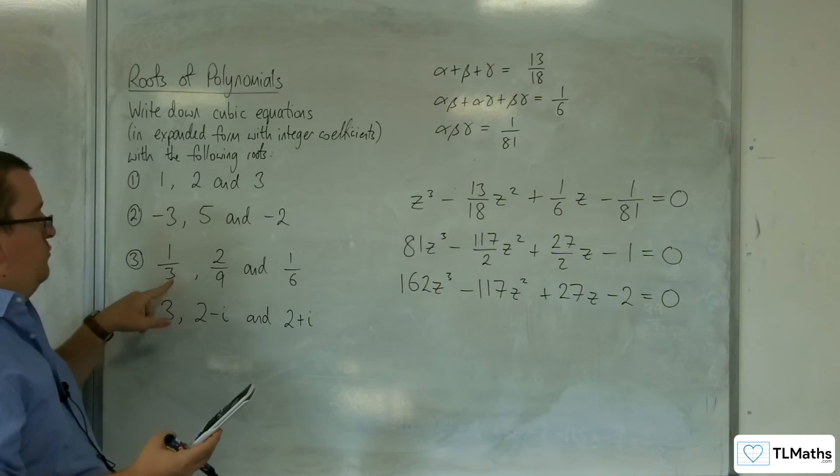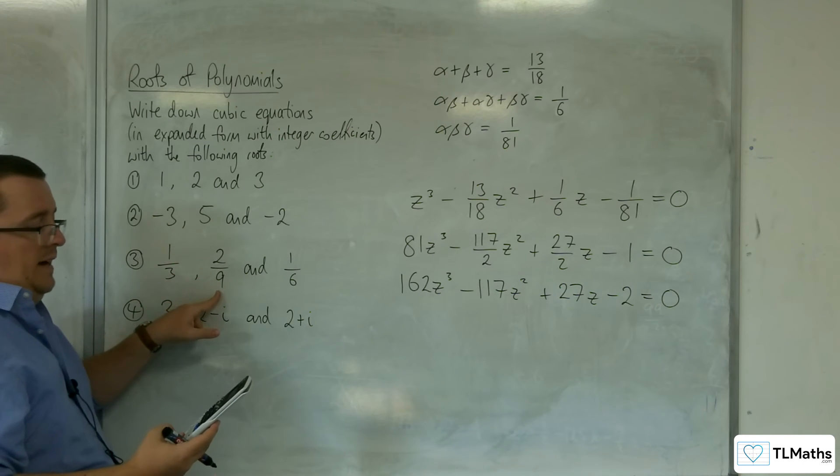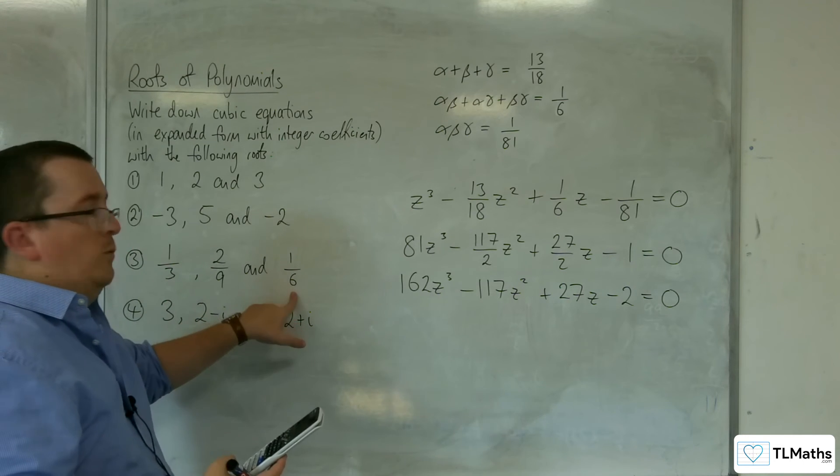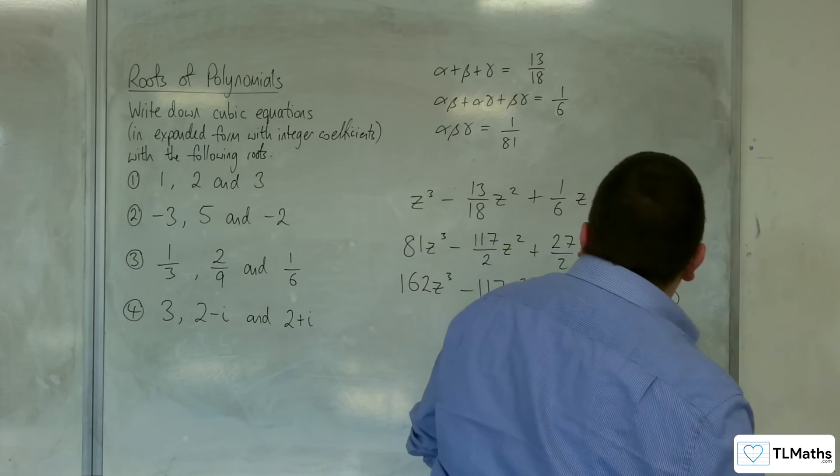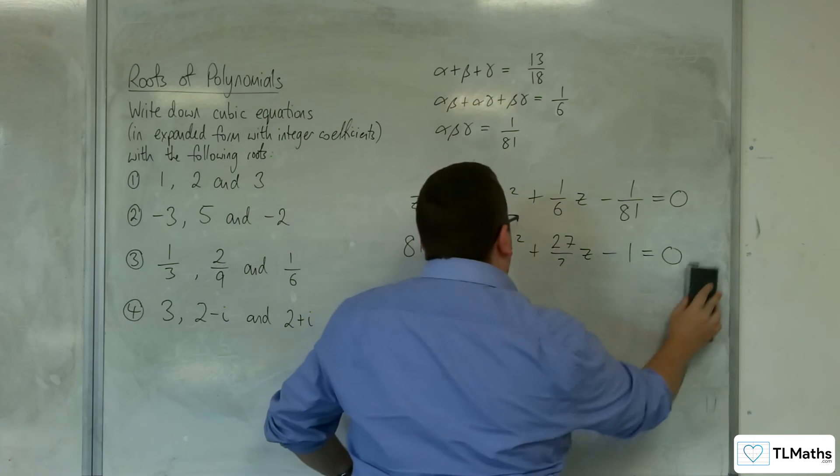Then we've got 0.2 recurring, which is the 2/9, and then we've got the 0.16 recurring, which is the 1/6. So, that all works out. So, that's number 3.